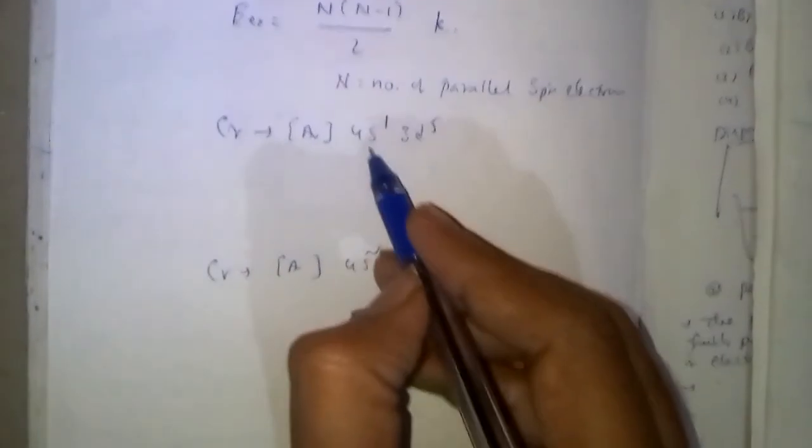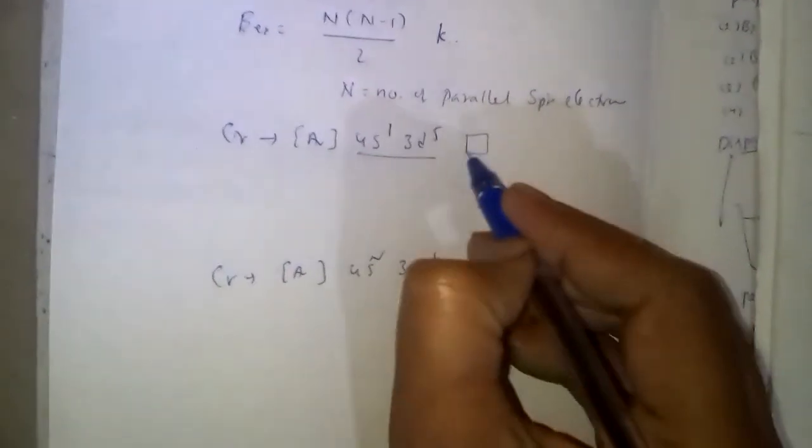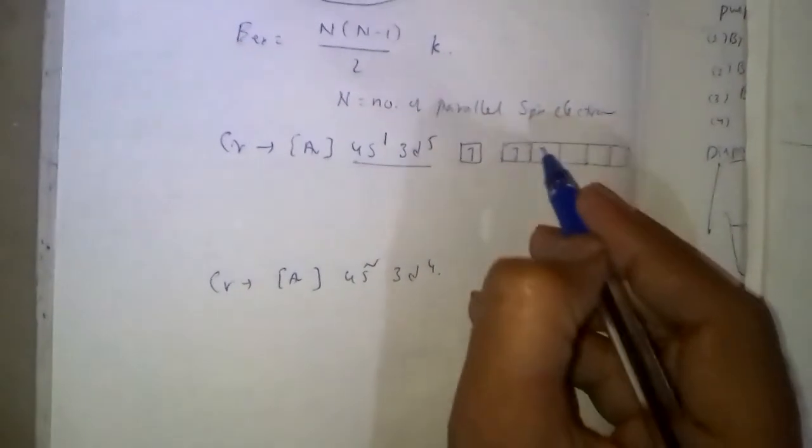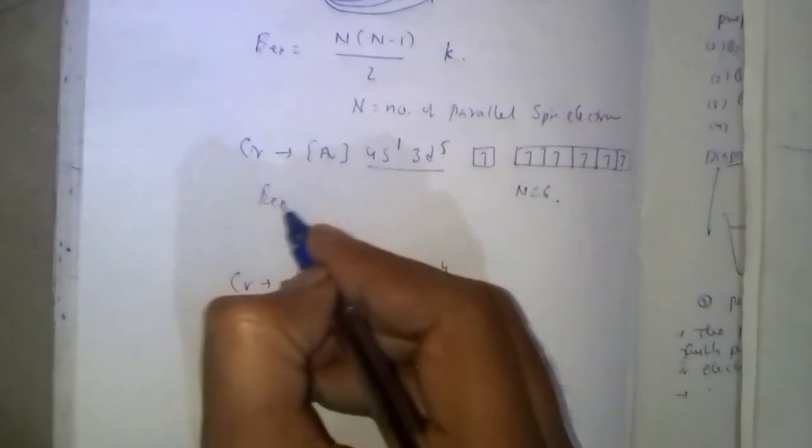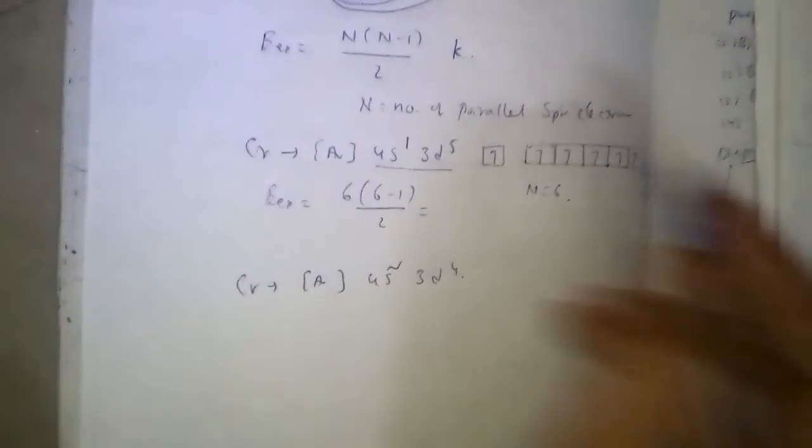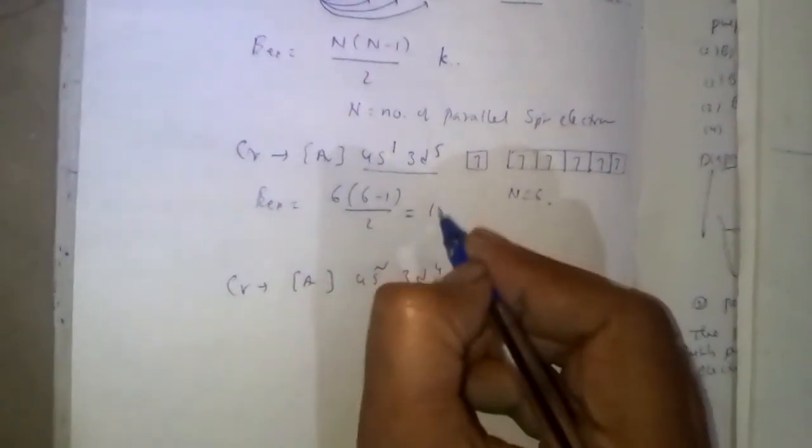In case of 4s1 3d5, number of parallel spin electrons: 1, 2, 3, 4, 5, 6. So n value is 6. We can calculate exchange energy = 6(6-1)/2, that is equal to 15k.